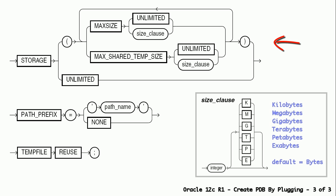PDB STORAGE clause can be used to define storage limits for the PDB. MAX SIZE is the upper limit for the combined total size of all tablespaces in the PDB. MAX SHARED TEMP SIZE is the upper limit of storage in the temporary tablespace for all active sessions connected to the PDB. PATH PREFIX clause can be used to ensure that file paths for directory objects and parameters associated with the PDB are restricted to the specified directory or its subdirectories. TEMP FILE REUSE clause can be used to instruct the database to format and reuse a temp file associated with the new PDB if it already exists.